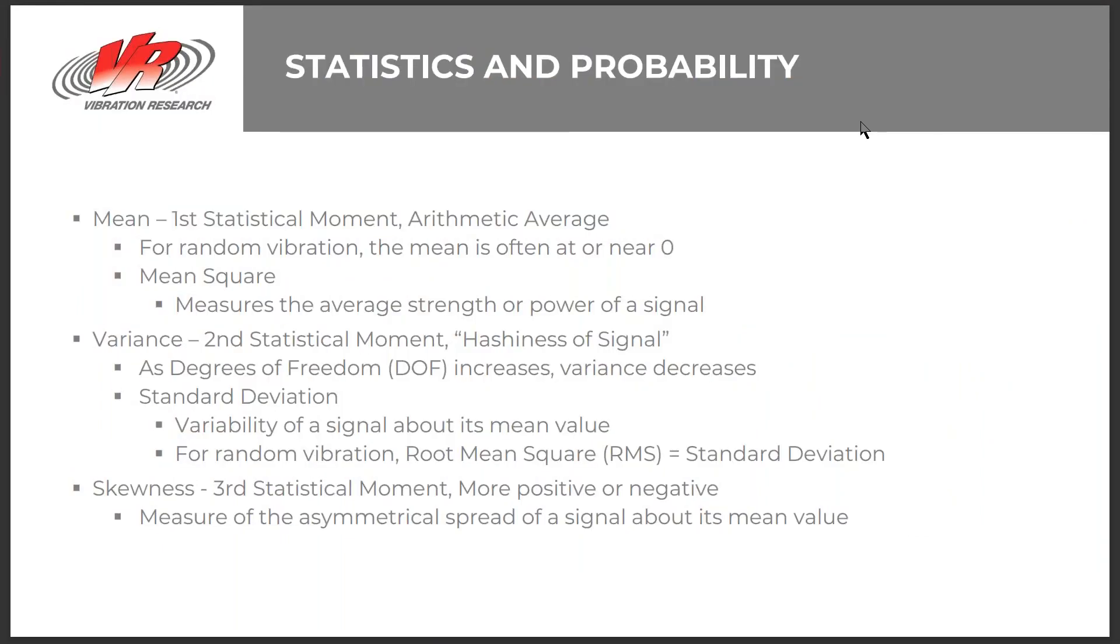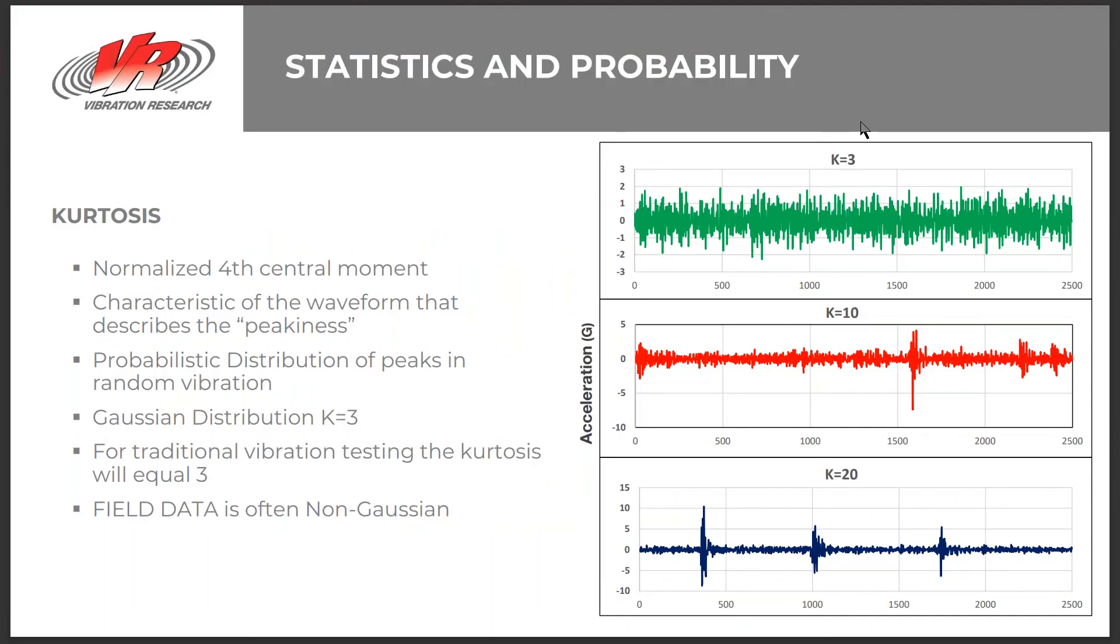A little about statistics. There's four in vibration testing that we primarily concentrate on. The first one is your mean or mean square value, which is where we get power. Second is variance. It describes the hashiness of a signal or variability of the signal around the mean. And skewness is the measure of the asymmetrical spread of a signal about its mean value. And the fourth is kurtosis.